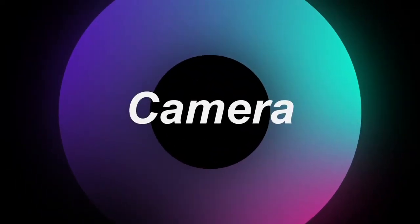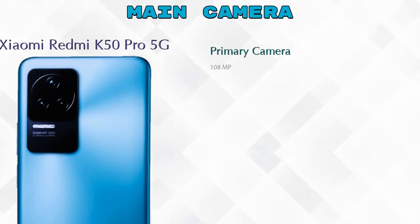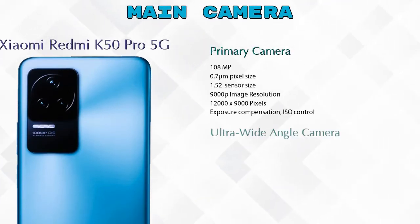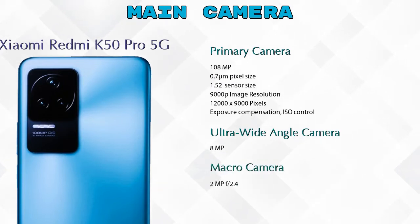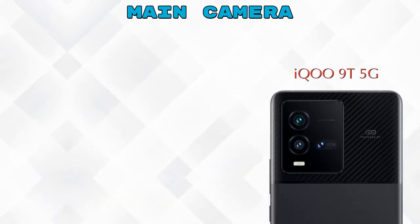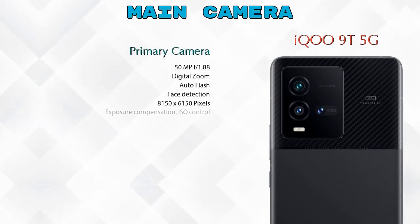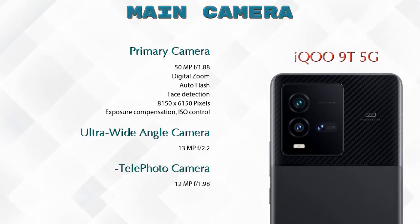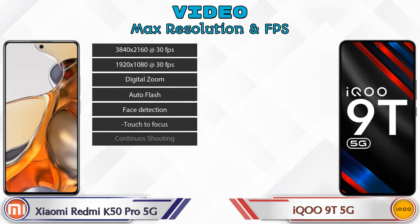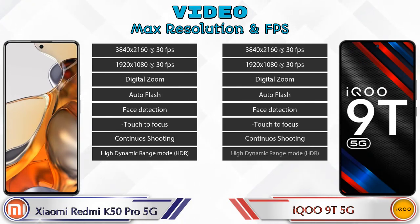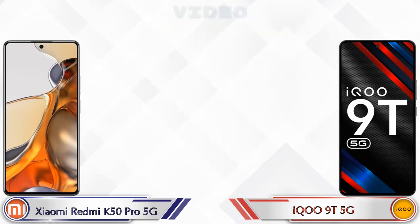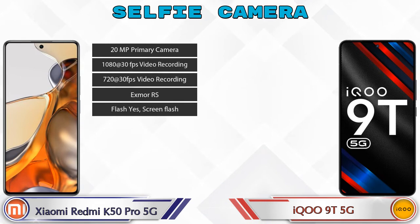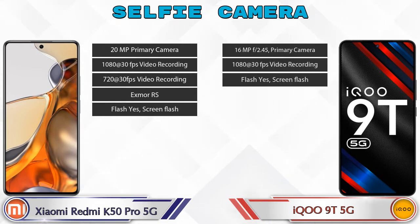Let's talk about cameras. For the rear camera, the K50 Pro 5G has three cameras: a primary camera, an ultra-wide angle camera, and a telephoto camera. For video, both phones have eight different types of features available. For the front selfie camera, the K50 Pro 5G has a single camera with five different features, and the iQOO 9 5G also has a single camera with three features available.